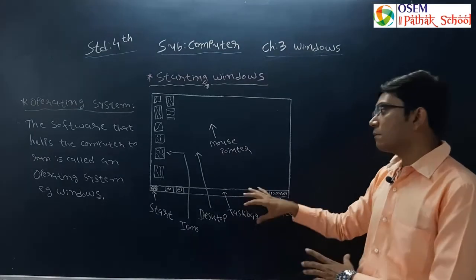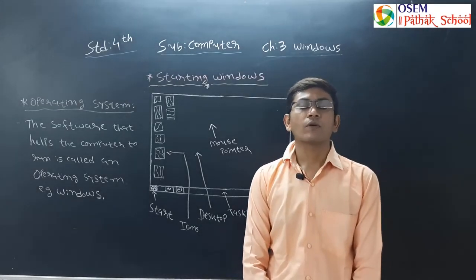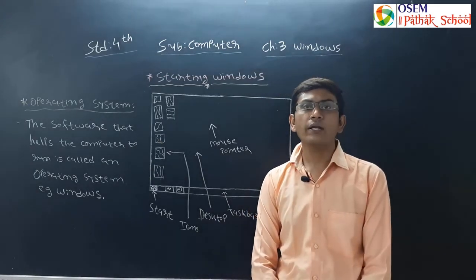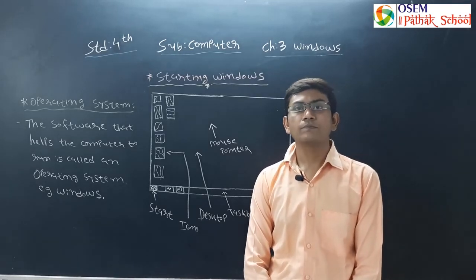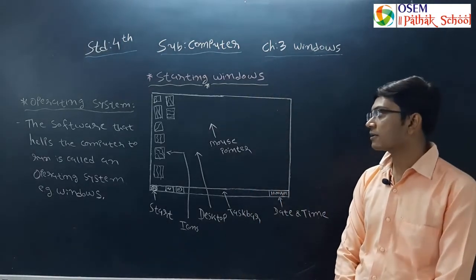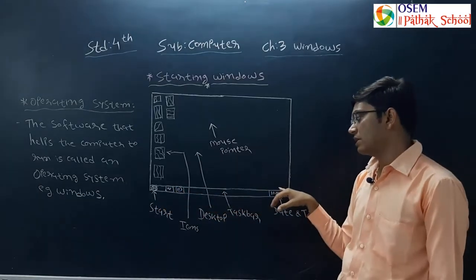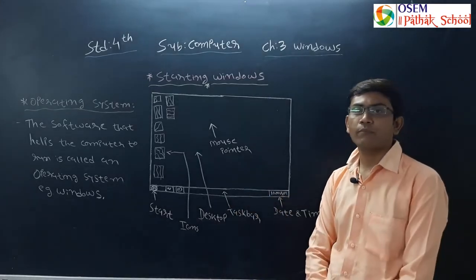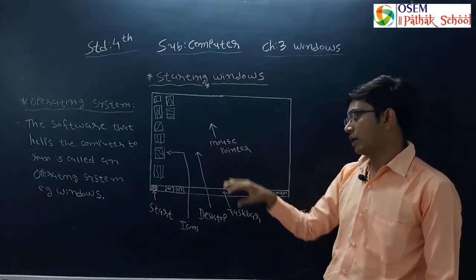So these are the basic things you need to understand in Windows operating system. The software that helps the computer to run is called an operating system, and Windows is a popular operating system. There are many terms to remember: the small pictures on the desktop are called icons, the bar at the bottom is known as the taskbar, the right side of the taskbar shows date and time, the left side shows the start button, and the main screen of the window is known as the desktop.